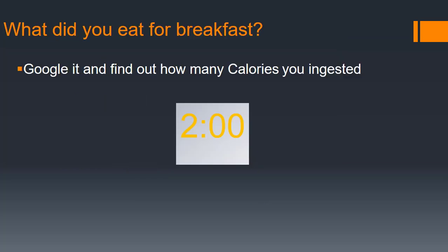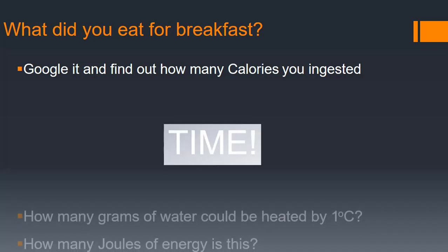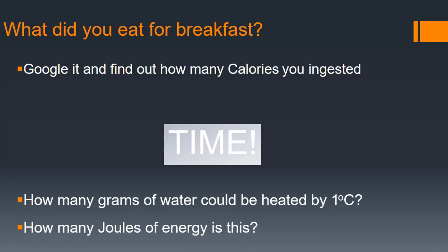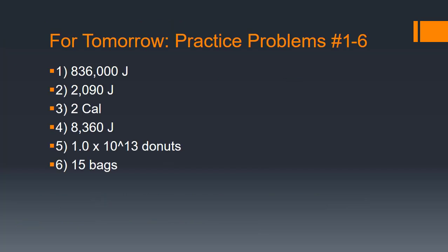Think back to what you had for breakfast. Do a quick search and find out how many calories you ingested. How many grams of water could be heated by 1 degree Celsius with that number of calories? Then convert those calories into joules. On your note sheet you have a few practice problems to do for tomorrow, and here are your answers so you can check your work.